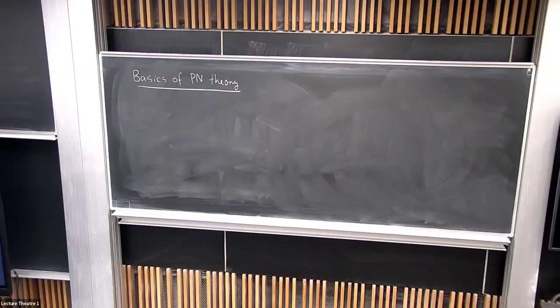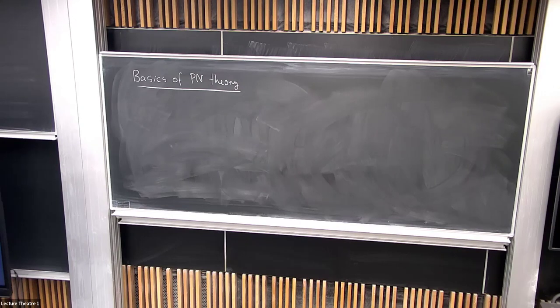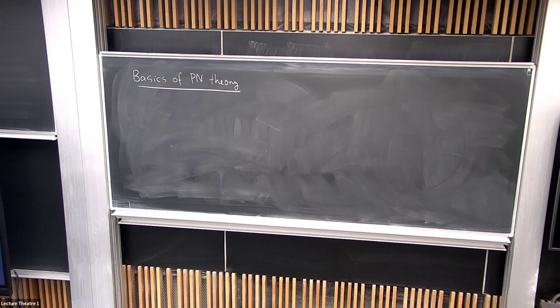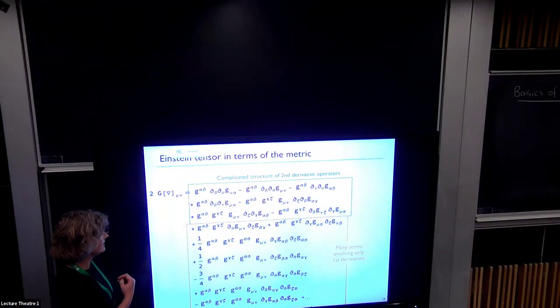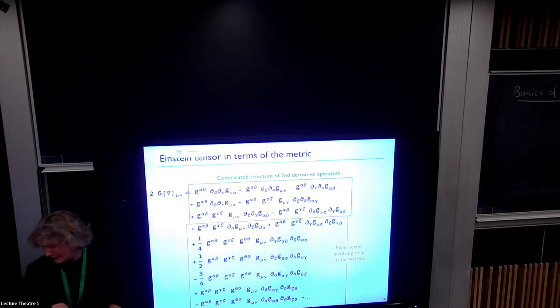To go to the Einstein field equations and try to solve them in an approximate way — this was produced by a mathematical notebook. If you ask it to output what the Einstein tensor is in terms of the metric, you see this horrible differential equation. Not even all the terms could be shown. The metric has 10 variables and each derivative has four components, so it's a horrible mess. One has to be careful what gauge to choose, because if one chooses the wrong gauge, one can end up with a mathematically unsolvable problem, if the structure of these second derivatives becomes mathematically not very nice.